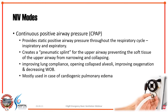There are two modes of NIV that we commonly use. The first mode is Continuous Positive Airway Pressure, or CPAP. This mode provides positive airway pressure throughout the respiratory cycle, both during inspiration and expiration. It creates a pneumatic splint for the upper airway, preventing the soft tissue from narrowing and collapsing. It works by improving lung compliance, opening collapsed alveoli, improving oxygenation, and decreasing work of breathing. This mode is mostly used in cardiogenic pulmonary edema.